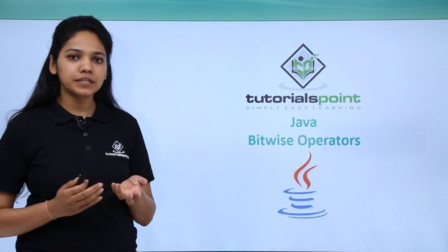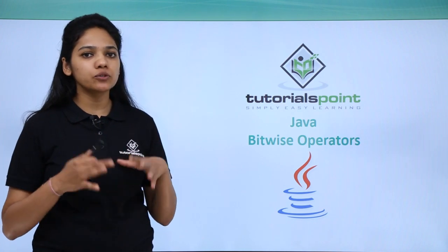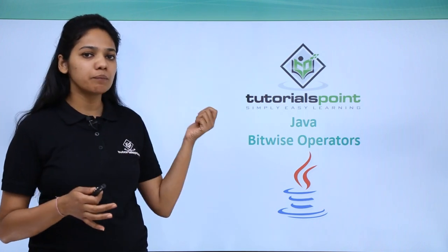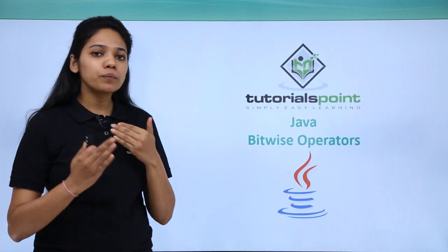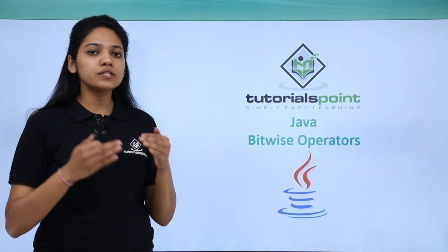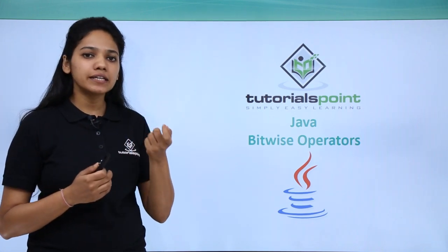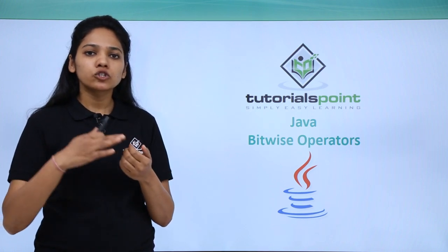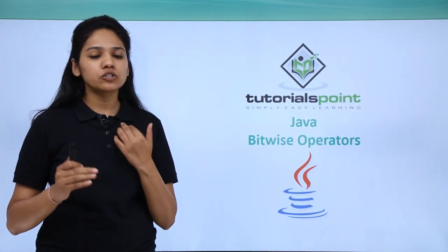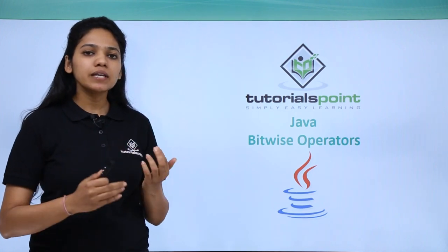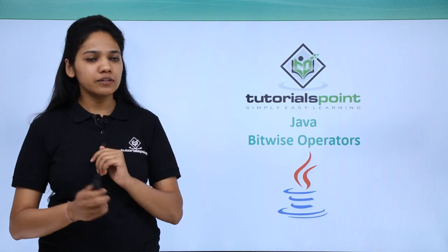Another type of operator is the bitwise operator. As the name indicates, the operation is performed bitwise on the operands. Every value, for example an integer value like 10 or 65, should be converted into a binary number represented in zeros and ones. Similarly, all operand values are converted into binary values.